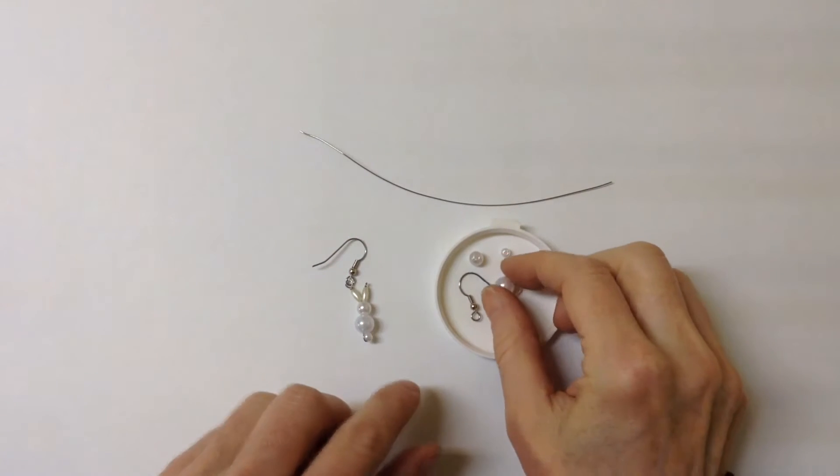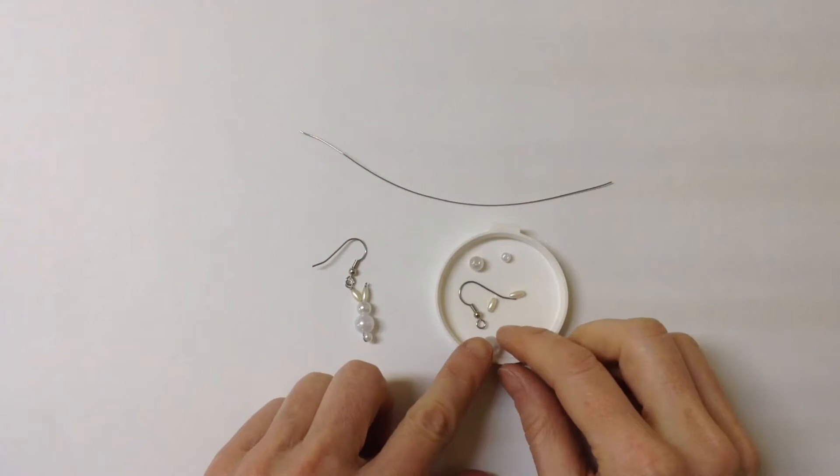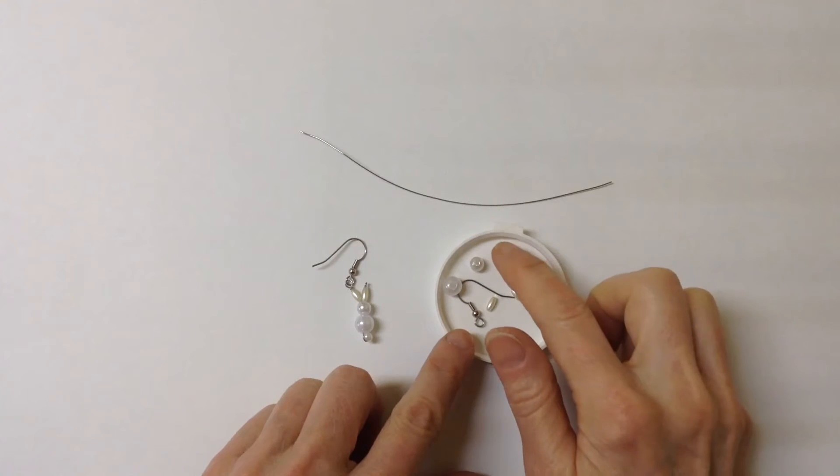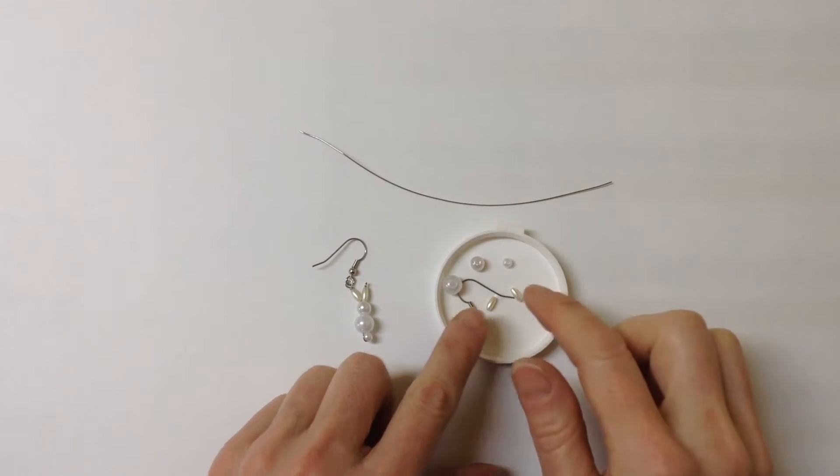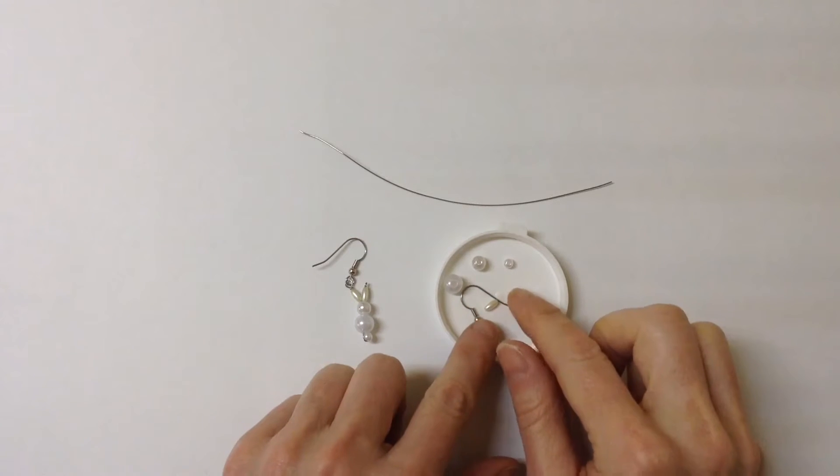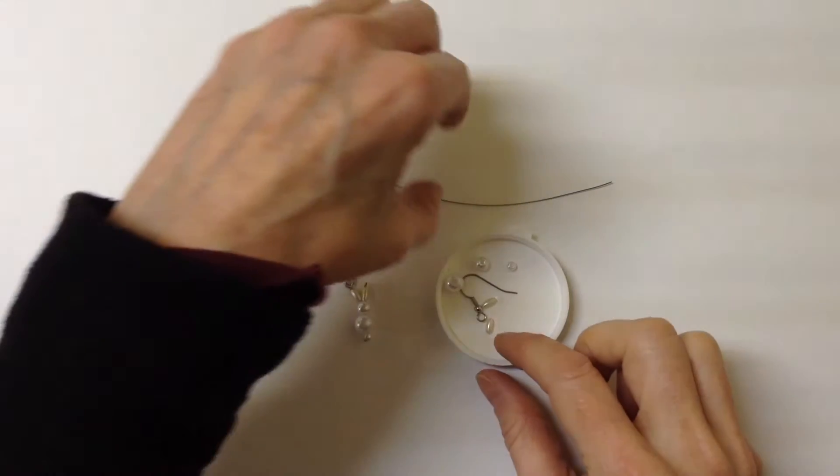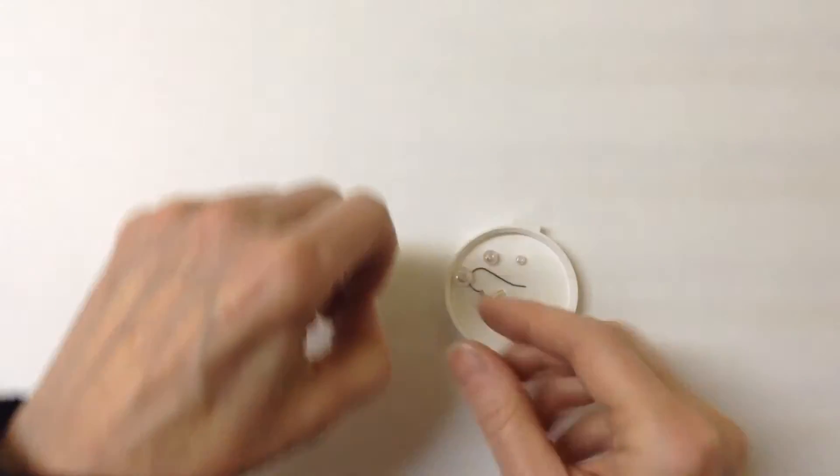You're going to need two 8 millimeter pearls, two 6 millimeter pearls, two 4 millimeter pearls, and then four of these little oval type beads, little pearly beads as well. I'm using 24 gauge wire.